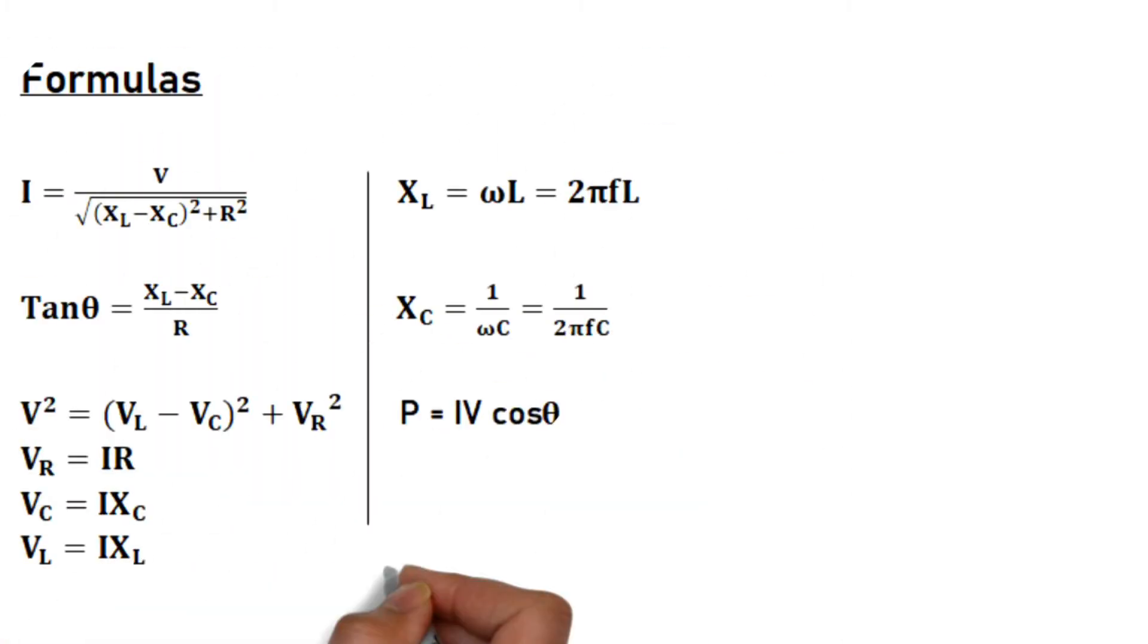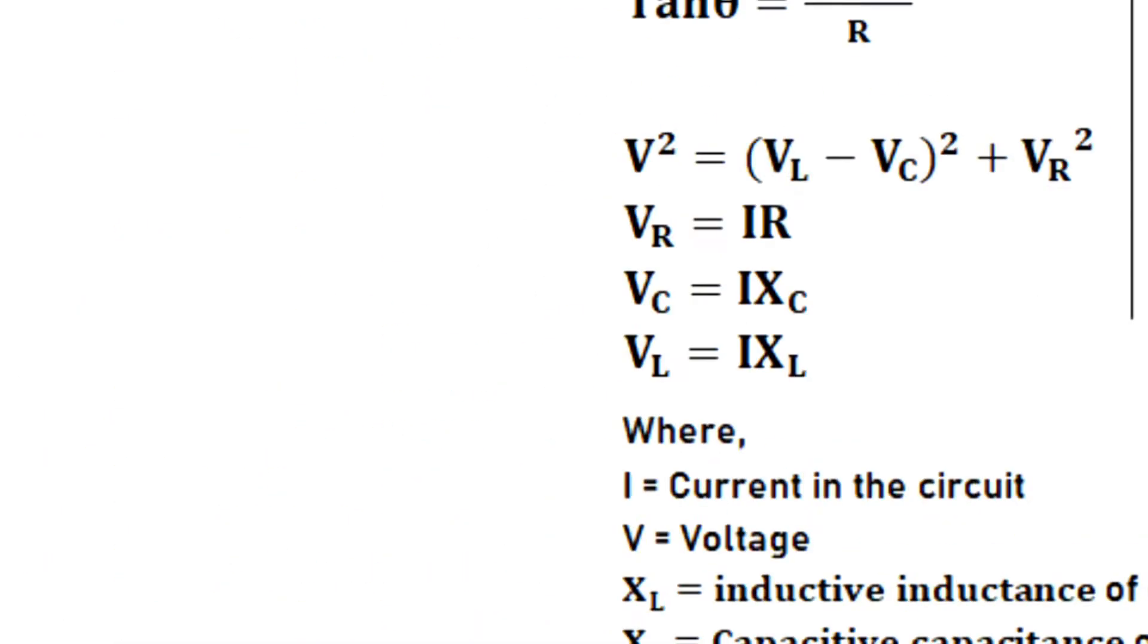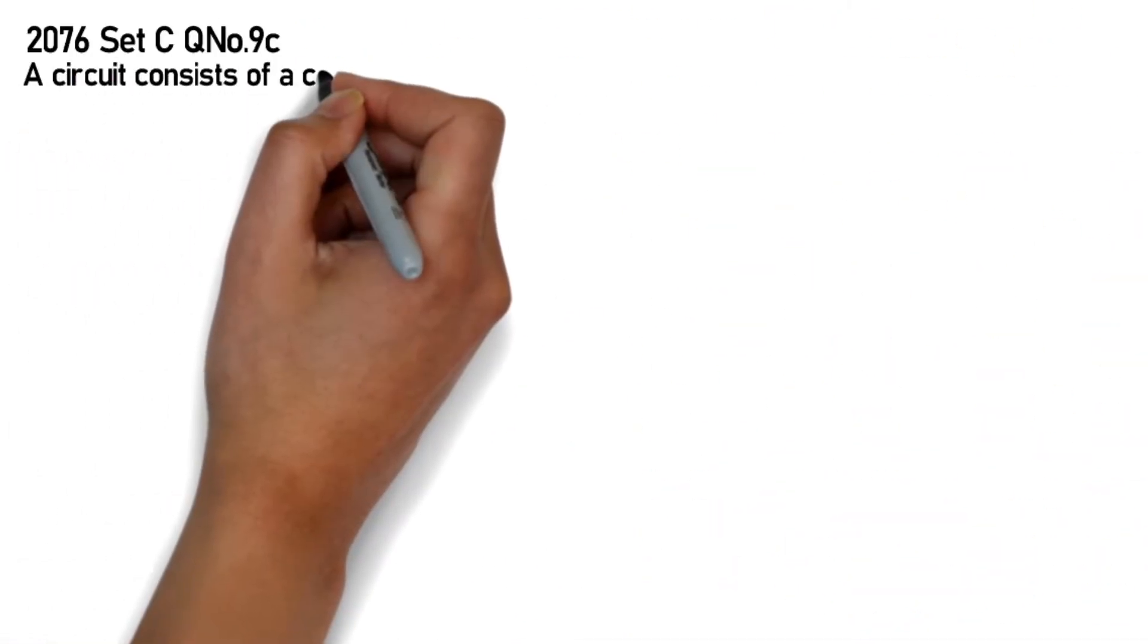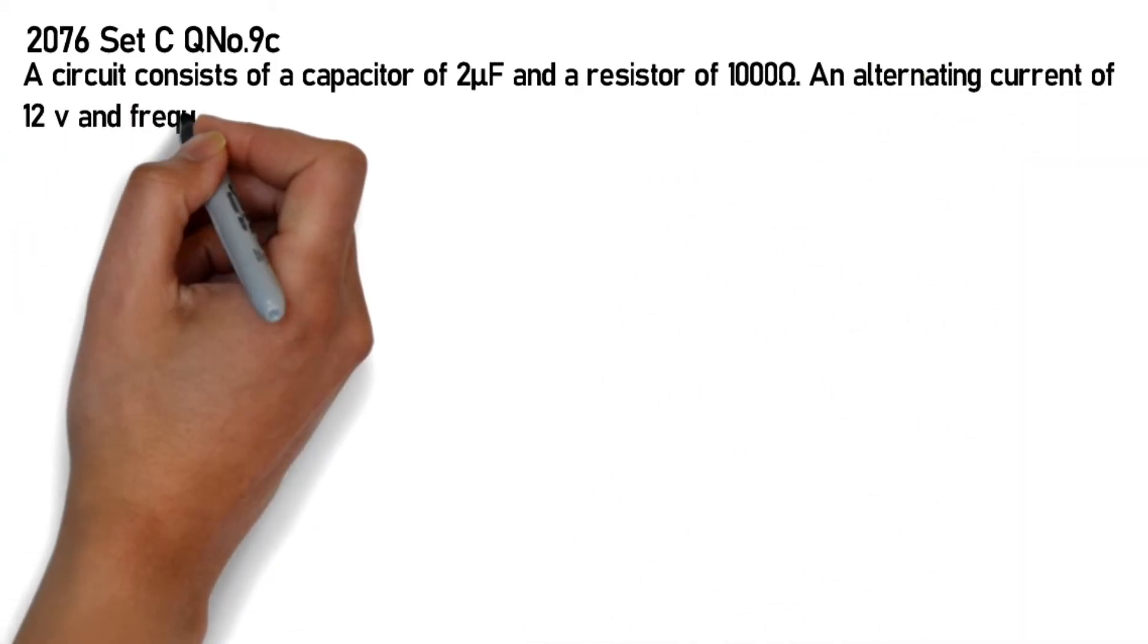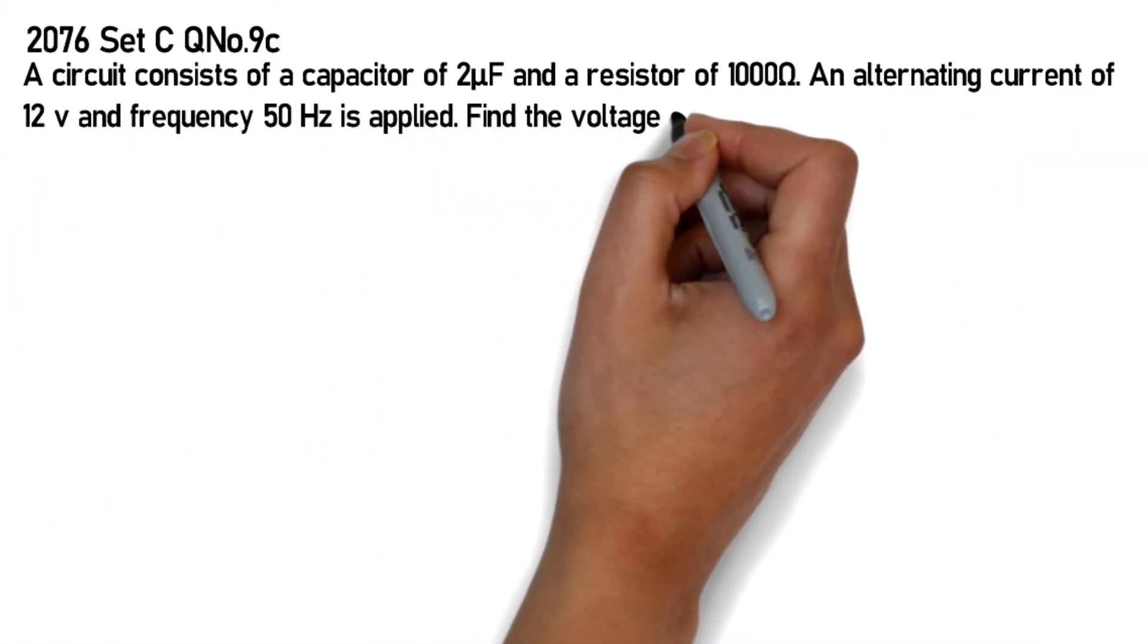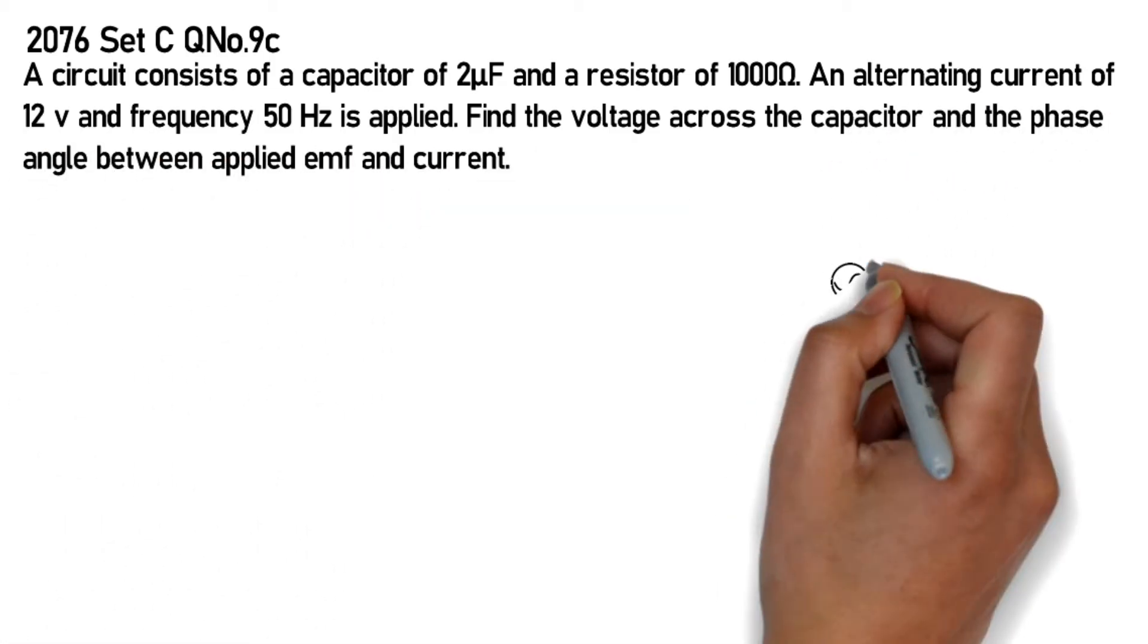I am going to solve this numerical circuit problem. A circuit consists of a capacitor of 2 microfarad and a resistor of 1000 ohm. An alternating EMF of 12 volt and frequency 50 Hz is applied. Find the voltage across the capacitor and the phase angle between the applied EMF and the current.